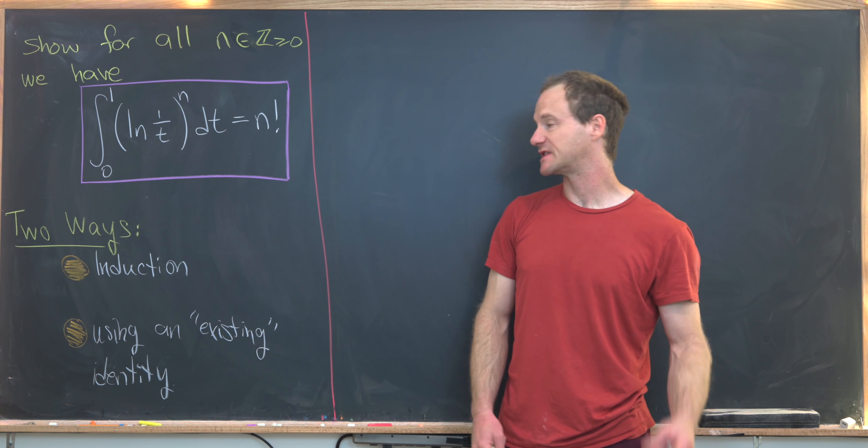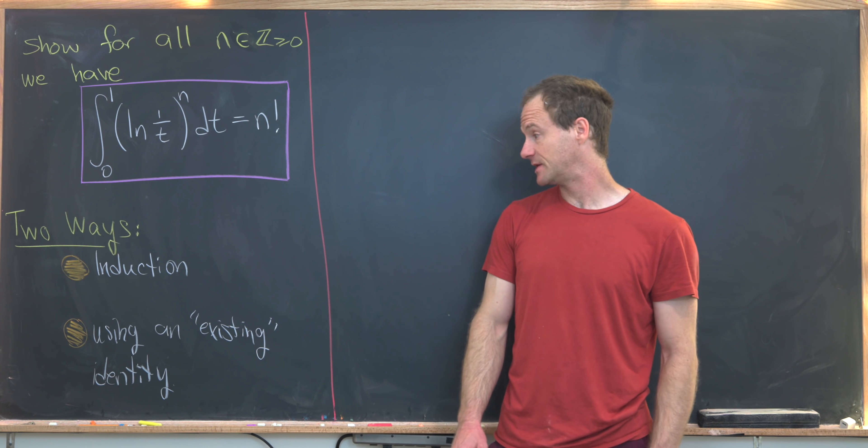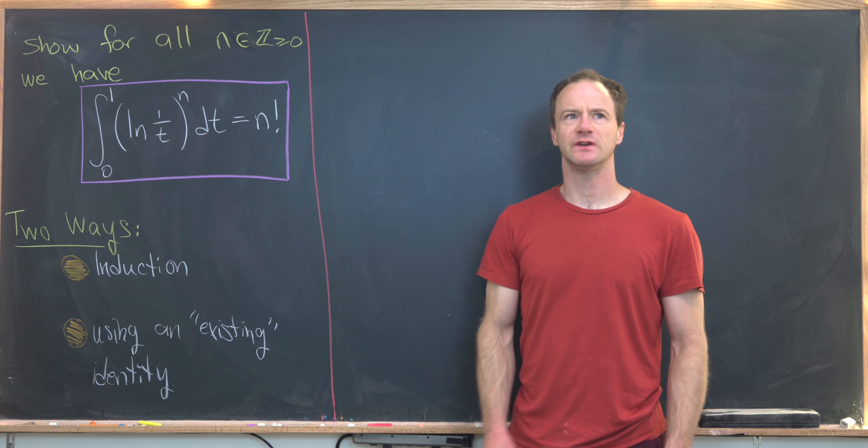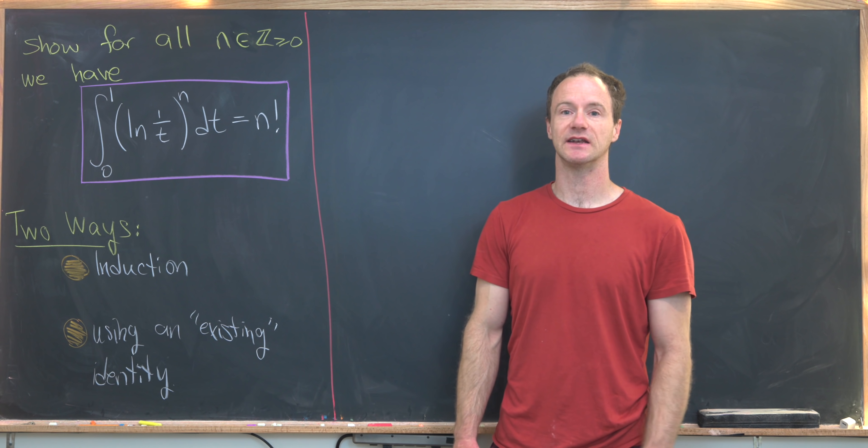And in fact, we'll do this two different ways. We'll first do it by induction, and then the second way we'll do it is make a substitution and transform this into a more well-known integral identity.